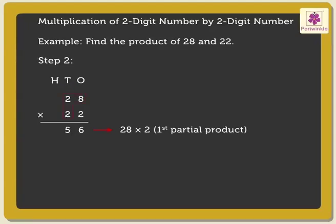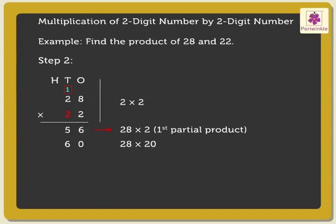Now, multiply 28 by the 2 in the tens place of the multiplier. As the digit 2 is in the tens place of the multiplier, we are actually multiplying 28 by 20. So we write a zero below the digit 6 of the first partial product. Next, 8 into 2 is equal to 16. After that, multiply the digit in the tens place: 2 into 2 is equal to 4, plus the carried over 1 is equal to 5. We get 560 as the second partial product.